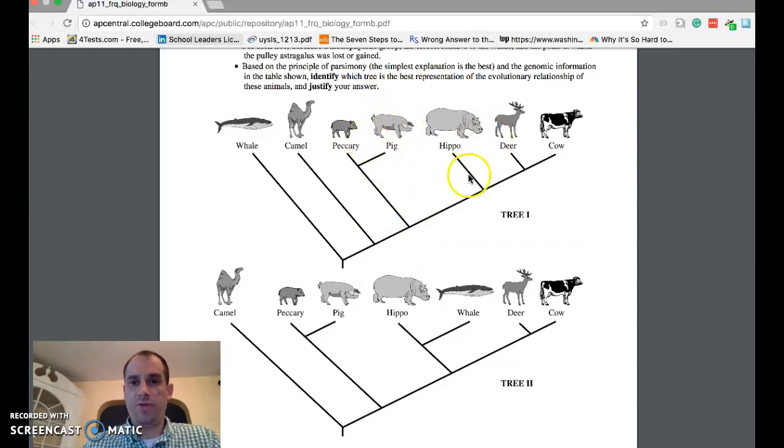In this tree, the hippo and the pig are closely related because they're close together. In this tree, the hippo and the whale are closely related because they're close together.